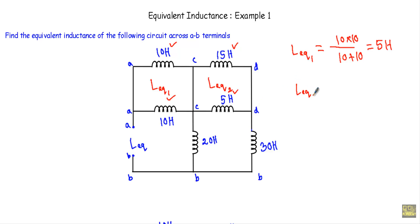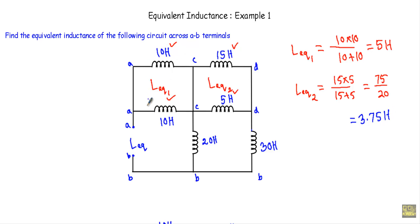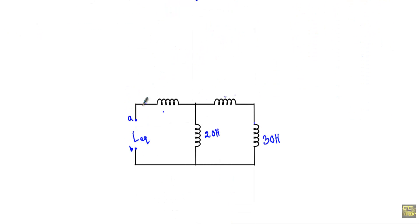L equivalent 2 will be equal to 15 × 5 divided by 15 + 5, which is 75 divided by 20, equal to 3.75 henry. So I can replace those two inductors with an inductor of 5 henry between A and C, and replace the other two inductors with an inductor of 3.75 henry between C and D.